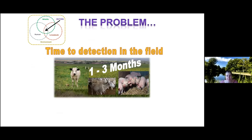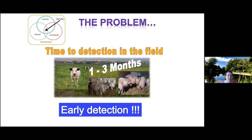Studies done in Europe have shown that once a disease appears in a country, it's usually been circulating one to three months before the first detection. The time to detection in the field is really, really delayed. We have amazing laboratories — once a suspicious sample arrives at the lab, you can identify the pathogen in hours. But the sample has to arrive to the lab, and that often doesn't happen until one to three months after the first infection. Early detection is definitely key, and we are not very good at that.